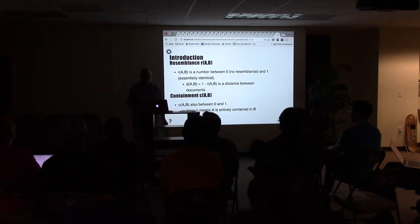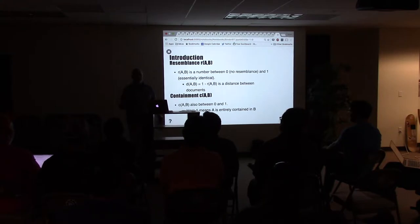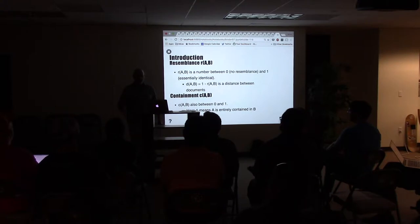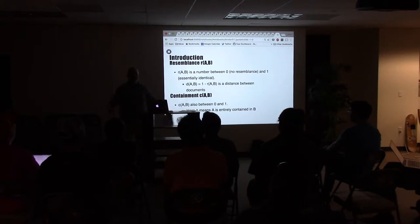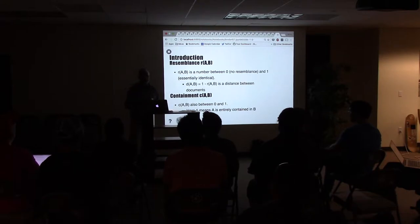The problem Broder was trying to fix was that you'd go to AltaVista and search for something, and the top ten documents would all be variations of the same document. That's still, to a certain extent, a problem in search. Broder does work at Google now, although his emphasis is on what they call computational advertising. He was trying to create two metrics — one describing the resemblance between two documents, and a containment metric — both ranging from zero to one.